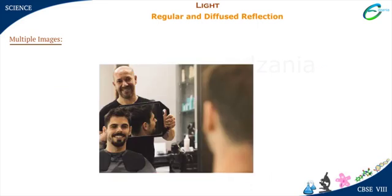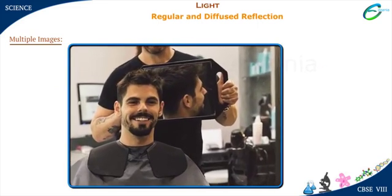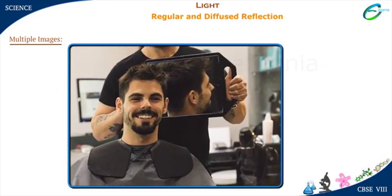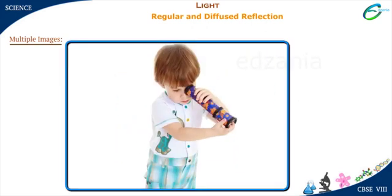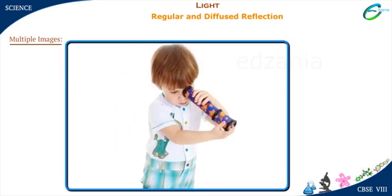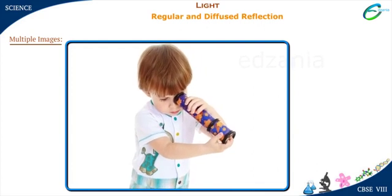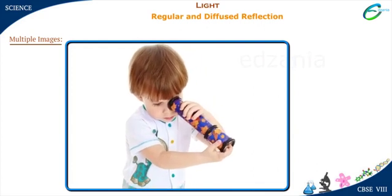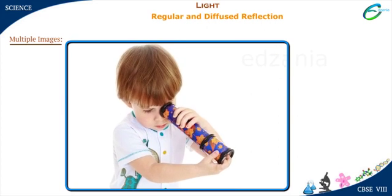A hairstylist uses two mirrors to show us our haircut on the head's backside. Have you seen a kaleidoscope? It consists of a tube containing various inclined plane mirrors and colored glass pieces or shiny objects to make colorful patterns by multiple reflections of light.